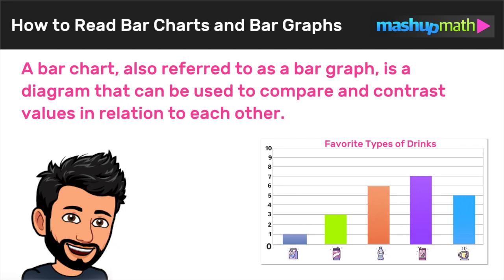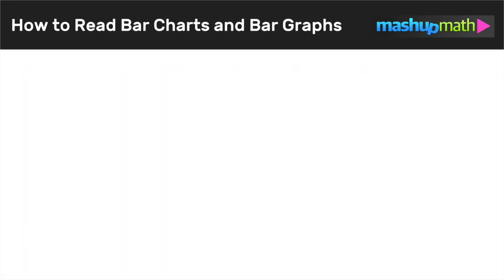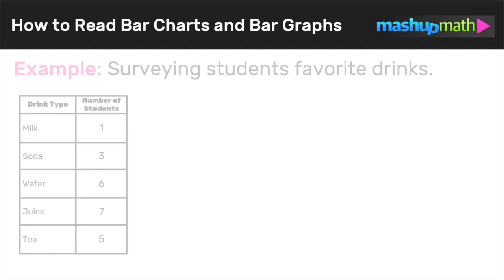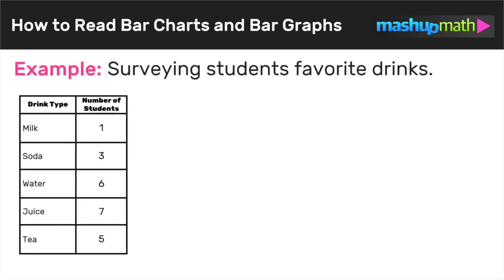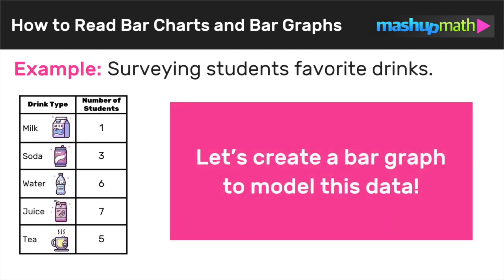Now let's take a look at a few examples of how to read bar graphs and what they're used for. In our first example, we're going to start off with a data chart. The data we're looking at is about a survey done on students concerning their favorite drinks, and what we're going to do is create a bar graph to model the data in the chart.